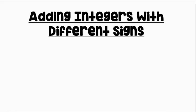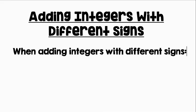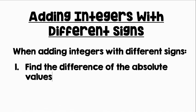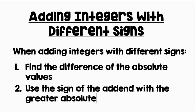Let's review our rule for adding integers with different signs. When adding integers with different signs, first, find the difference of the absolute values. Then, use the sign of the addend with the greater absolute value.